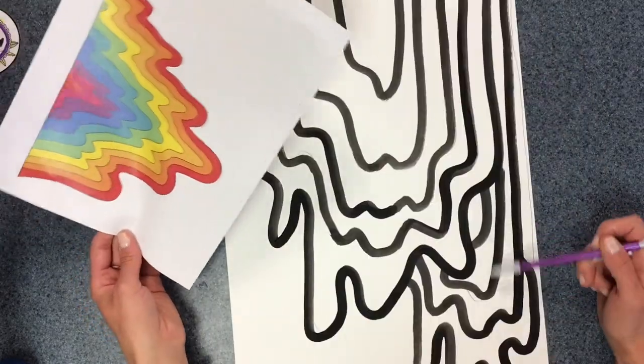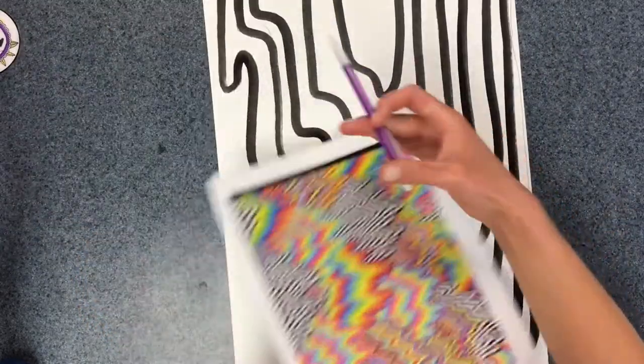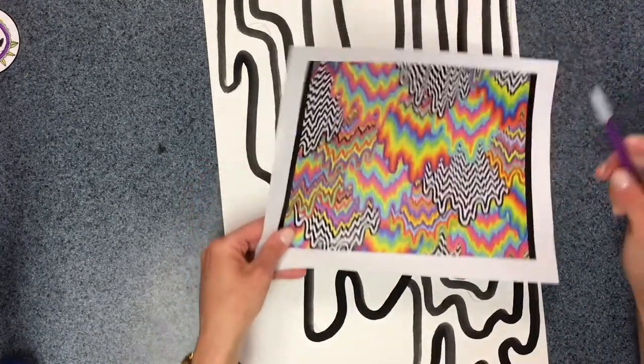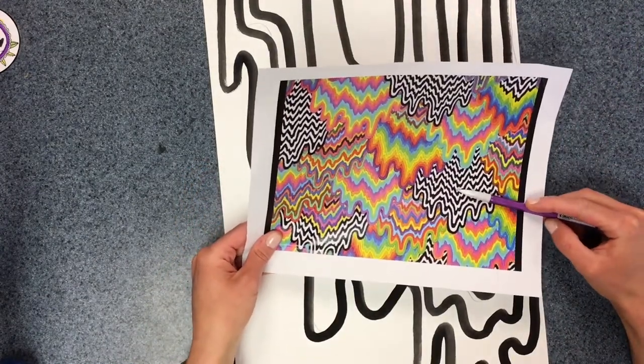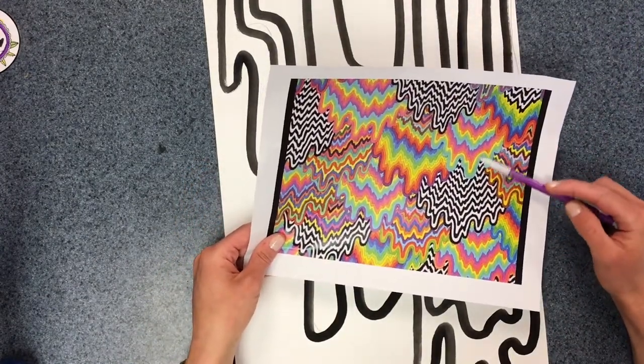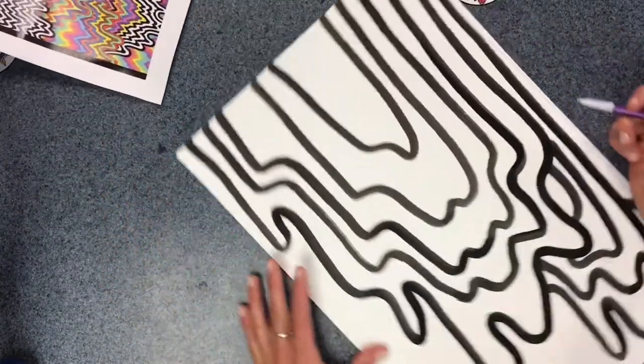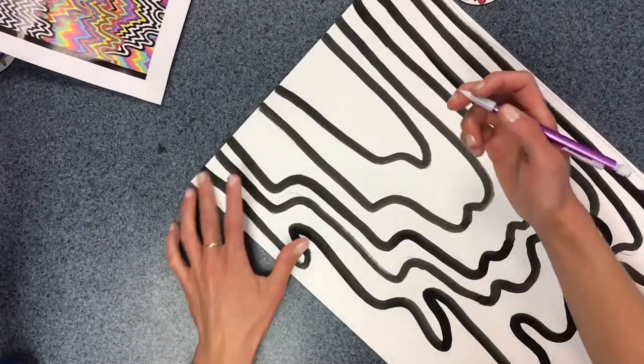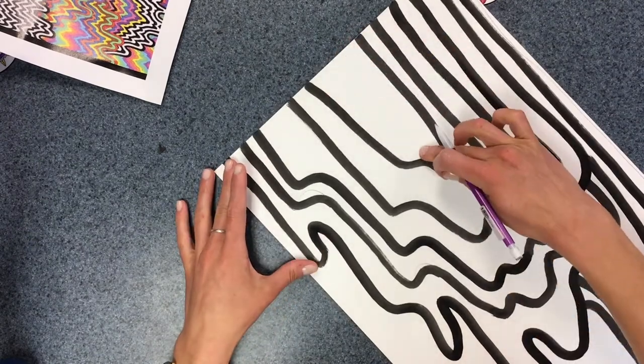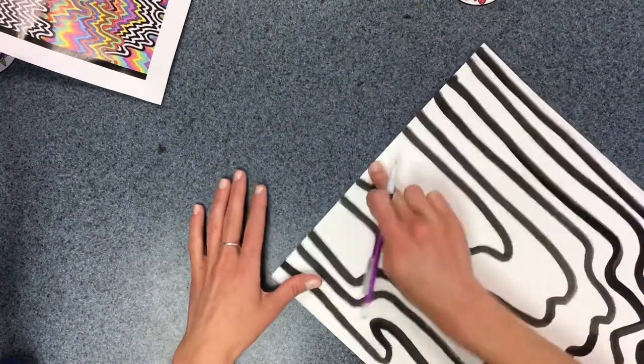I think I definitely want to do the black and white pattern in part of my drip. So I'm going to do that and then I'm going to choose three or four of my favorite colors to repeat here. So I'm going to write with a letter on each drip kind of at the top what color it's going to be.